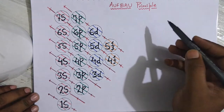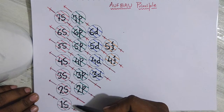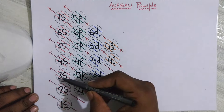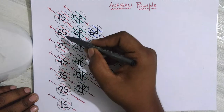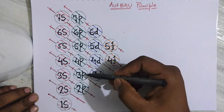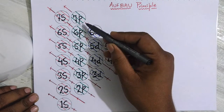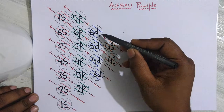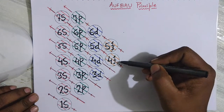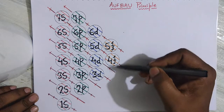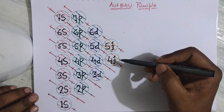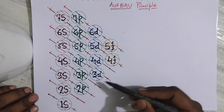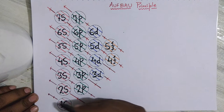To understand the Aufbau principle, you have 7s orbitals: 1s, 2s, 3s, 4s, 5s, 6s, and 7s. Then you have 2p, 3p, 4p, 5p, 6p, and 7p orbitals. In d you have 3d, 4d, 5d, and 6d orbitals, and in f you have 4f and 5f orbitals. You place them in this order and then draw parallel diagonal lines passing through these orbitals, following the upward arrows.